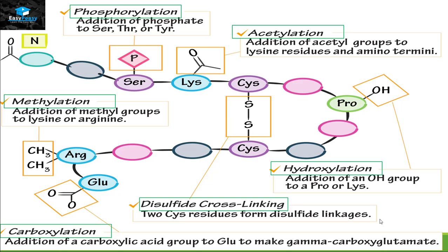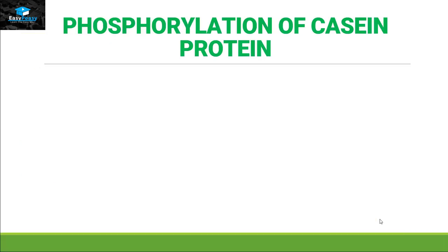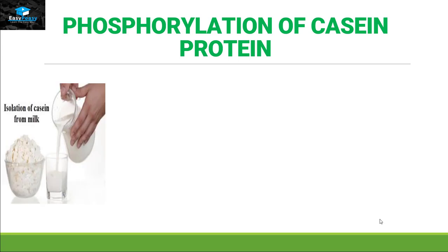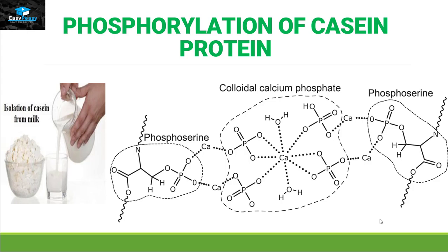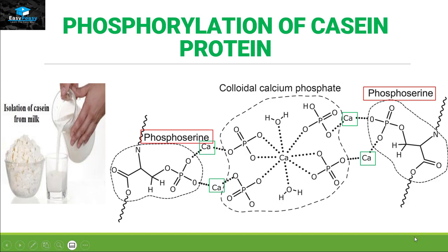The function of each covalent modification differs depending on the protein. Let's take real-life examples. The first is phosphorylation of casein protein. Casein is a protein present in milk that helps the attachment of calcium ions within our bones. Looking closely, casein has many serine amino acids with phosphate groups attached. This phosphorylation on serine helps the attachment of calcium ions to the protein, which is how calcium attaches to our bones and makes them stronger.